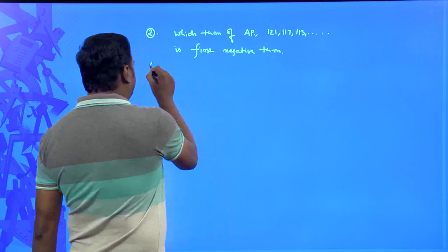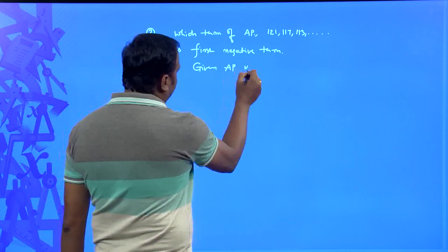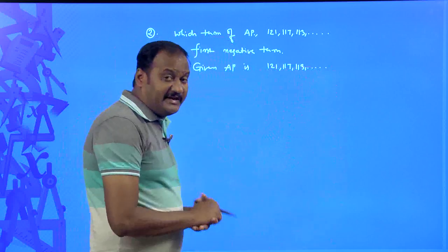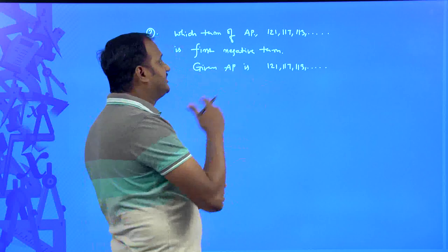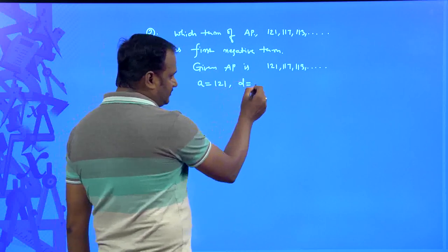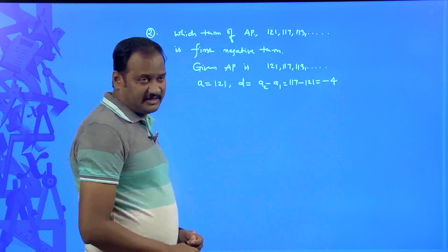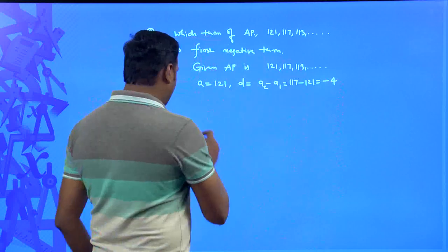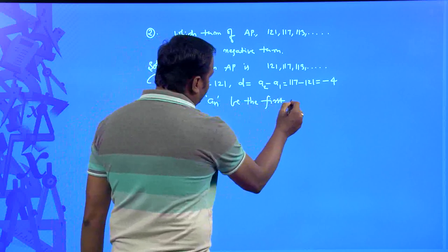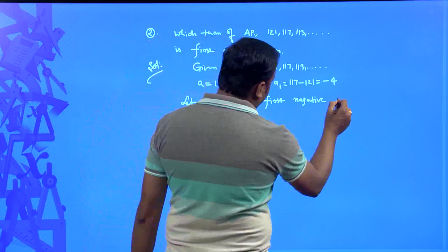To find the first negative term of the AP 121, 117, 113, ..., we identify a = 121 and common difference d = 117 − 121 = −4. We don't know which term is the first negative term, so let aₙ be the first negative term. Since negative terms are less than zero, we write aₙ < 0.